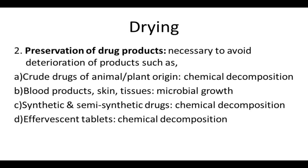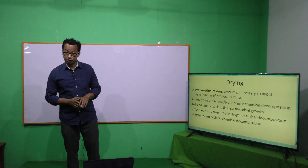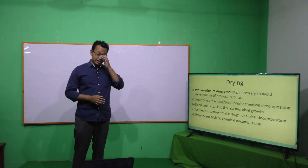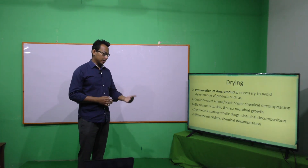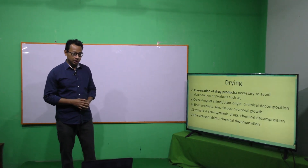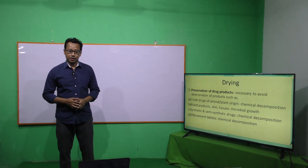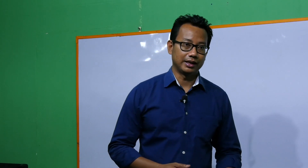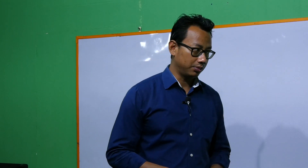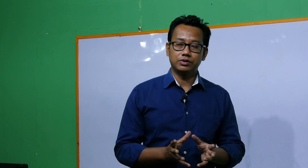Preservation of drug products may apply to crude drugs — that means drugs from plant or animal origins — which are decomposed by chemical decomposition. Secondly, blood tissues and other skin products which are degraded by microbial growth. Semi-synthetic and synthetic drugs as well as effervescent tablets which are degraded by chemical decomposition. So to prevent this kind of decomposition, drying becomes essential.